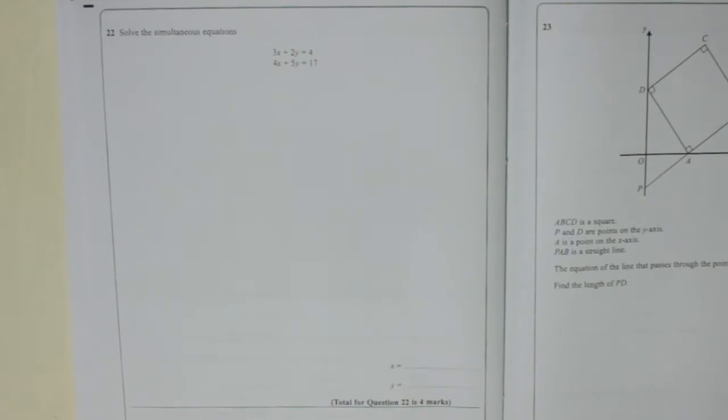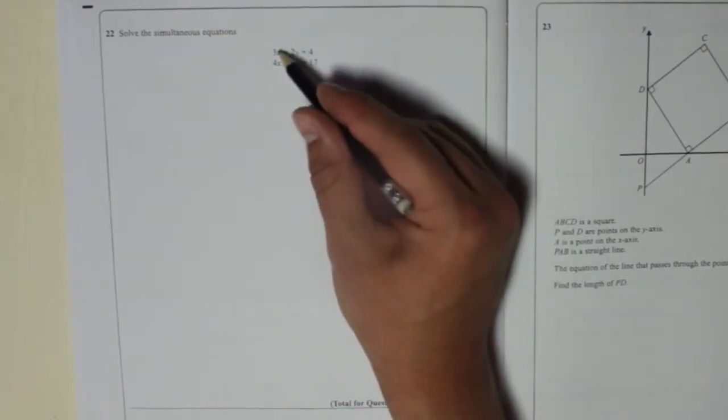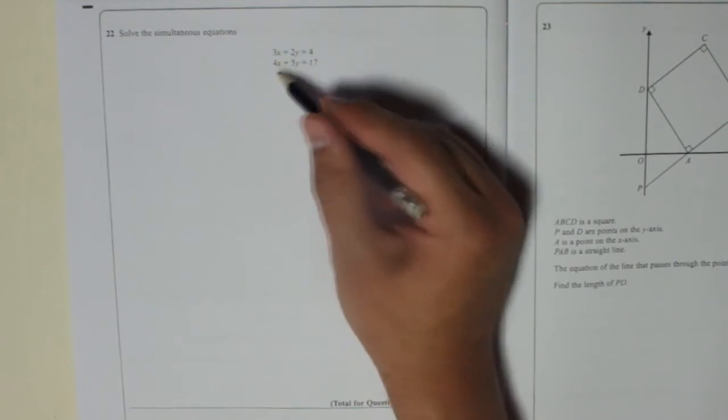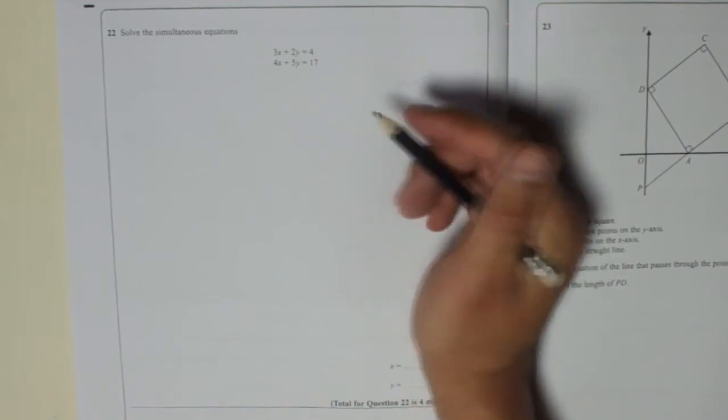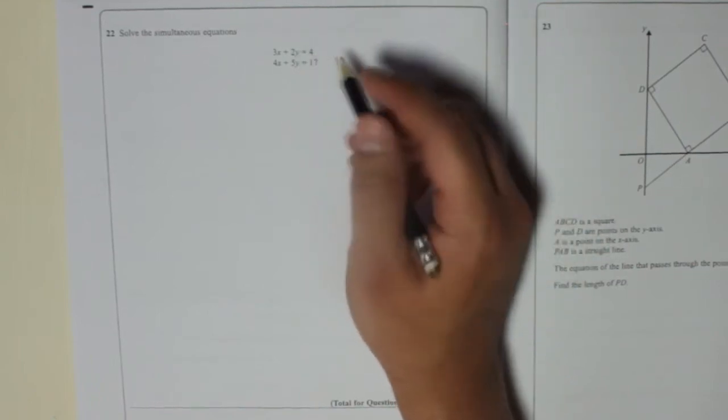So what we need to do is match up the number of either x's or y's. Now if you look at that, 3x and 4x, the lowest common multiple of 3 and 4 is 12. So you could multiply each line so you get 12x on both. Or you can do the y's. 2 and 5 both go into 10. So you'd match them up by getting 10y on each one. And I think that's what I'm going to do. I'm going to eliminate the y's by making those the same.